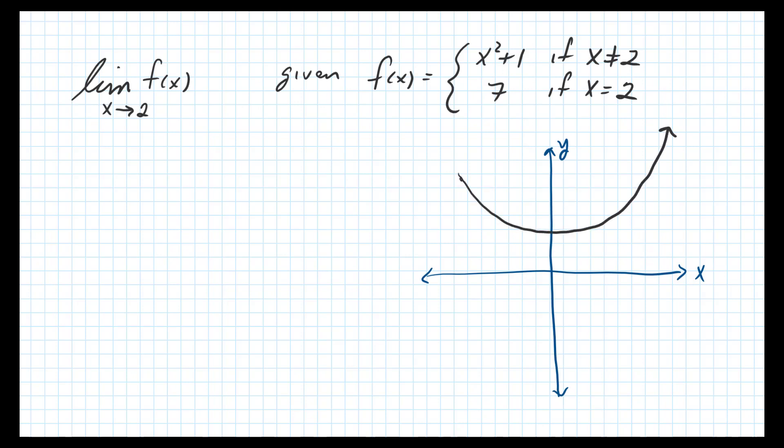And here, that's for values that are not equal to 2. So at the x value of 2, we're redefined at 7, so there's like a hole here and then the redefinition here, maybe say is 7.